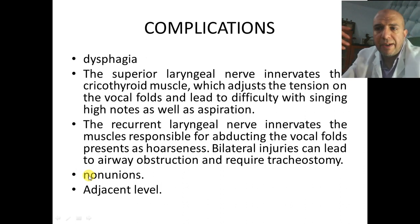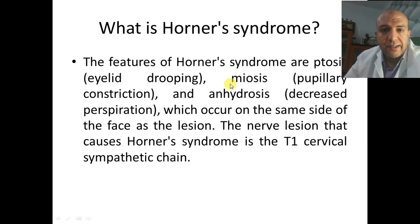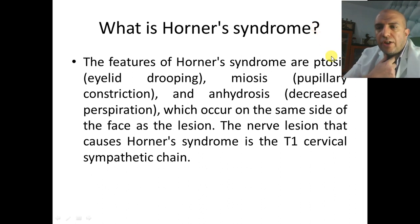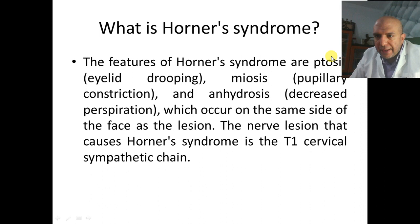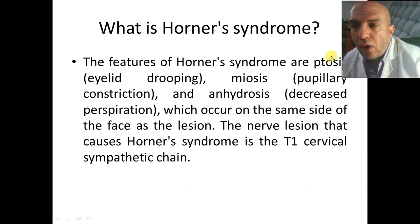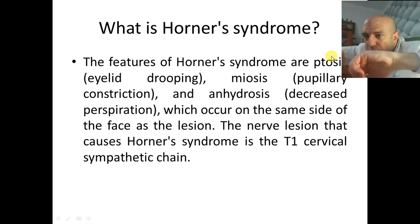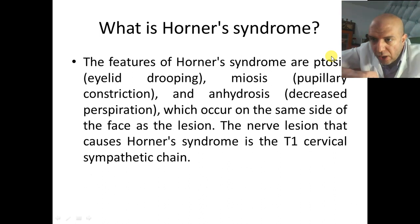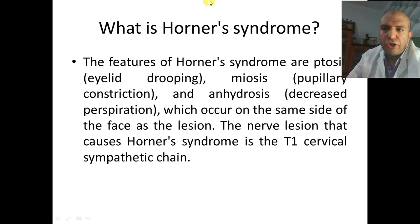If pseudarthrosis is asymptomatic, do nothing for the patient. If symptomatic, you can go posteriorly. Adjacent level disease is also a concern. Regarding Horner's syndrome — miosis and anhidrosis — this can occur during deep retraction at the prevertebral fascia. There are two muscles passing longitudinally — the longus colli — below which runs the sympathetic chain. If I don't place the retractor deep below the longus colli, I will compress the sympathetic chain and can cause Horner's syndrome.